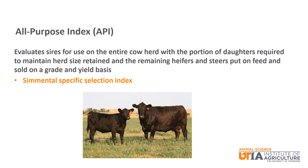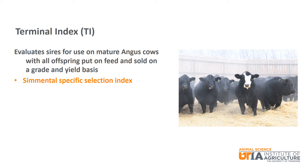We will finish up with two Simmental-specific selection indexes. The first is the All-Purpose Index or API, which evaluates sires for use on the entire cow herd, with the portion of daughters required to maintain herd size retained and the remaining heifers and steers put on feed and sold on a grade and yield basis. Finally, there is the Terminal Index or TI, which evaluates sires for use on mature Angus cows with all offspring put on feed and sold on a grade and yield basis.